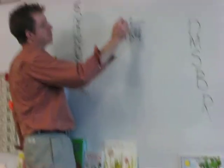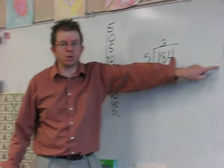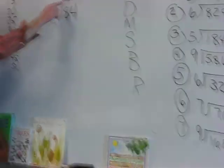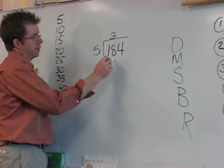So one, two, three. So it goes in three times. Next step is multiply. Five times three is fifteen.